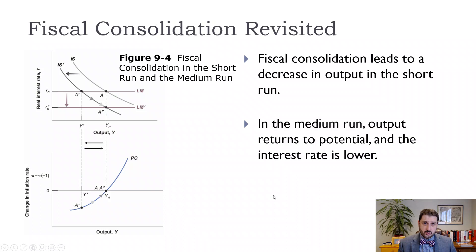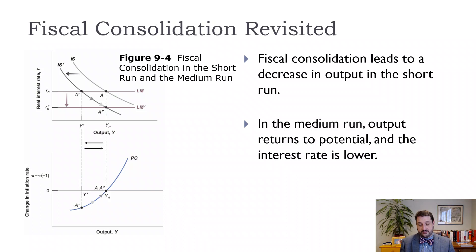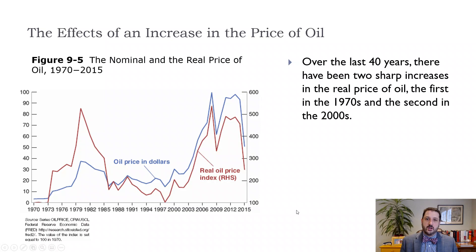The problem becomes estimating that natural level of output or the natural rate of unemployment — you end up with estimates that it goes down in long recessions, which doesn't quite make sense. It depends on what you mean by the natural level of output: if you're not investing in capital or technology, then yes, your natural level of output is going to fall, but whether that's truly 'natural' is an open question.